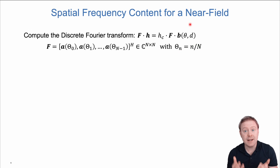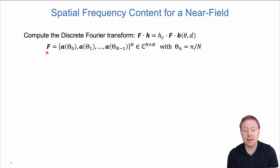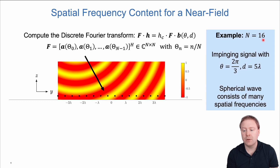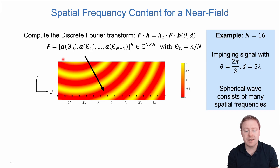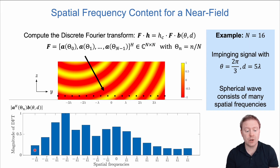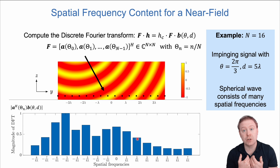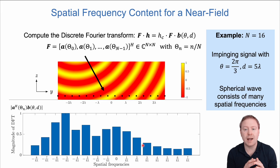What happens if we have a near-field channel? We can still multiply any channel vector by the DFT matrix. In this case H is the near-field array response vector times some common factor, and F is defined the same way as before. With 16 antennas and a signal impinging from the same angle as before but from only five wavelengths away—a relatively near distance—we see a spherical wavefront. The spatial DFT of this near-field channel shows that the spherical wave actually consists of all spatial frequencies, because the signal is so close that it spreads out over all spatial frequency bins.